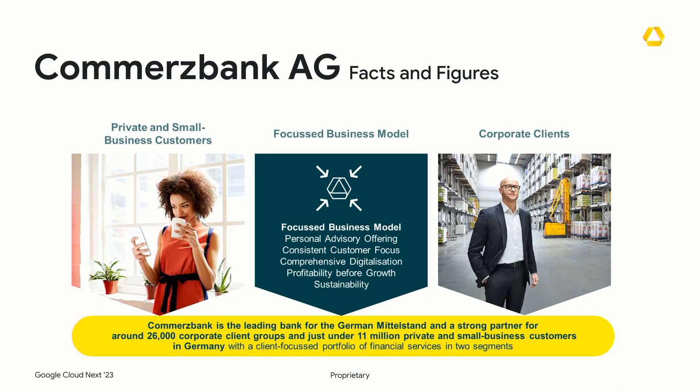Commerzbank's business model is structured into five elements: personal advisory offering — the customer is always our focus; consistent customer focus — adapting to changing customer demands; comprehensive digitalization — we're offering more and more services on a digital level; profitability before growth — maintaining focus on the customer; and sustainability — providing sustainable solutions and helping our customers transition to sustainable strategies.